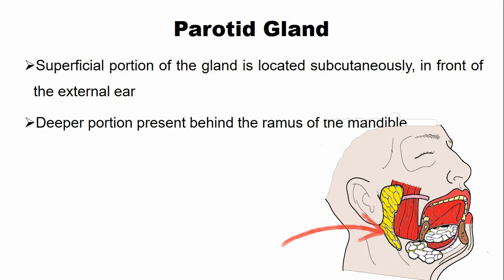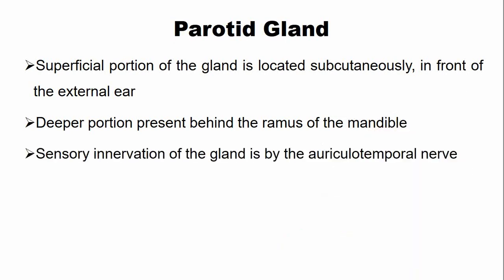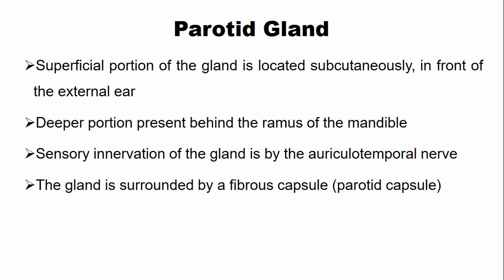The sensory innervation of this gland is through the auriculotemporal nerve, which is a branch of the mandibular division of the trigeminal nerve. The gland is surrounded and protected by a fibrous capsule, also known as the parotid capsule.